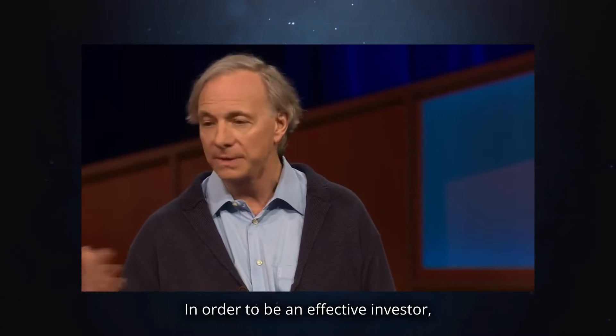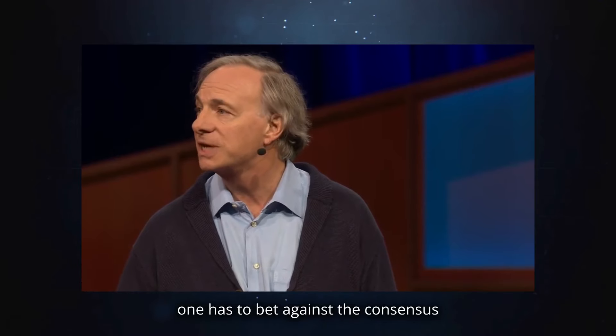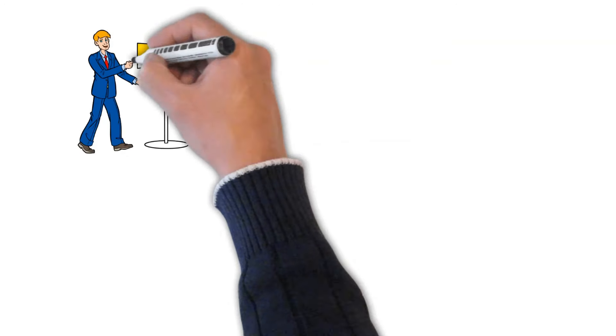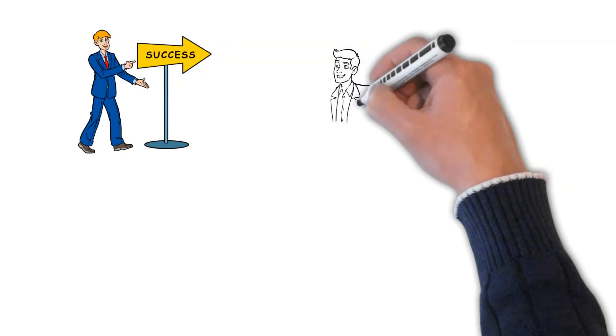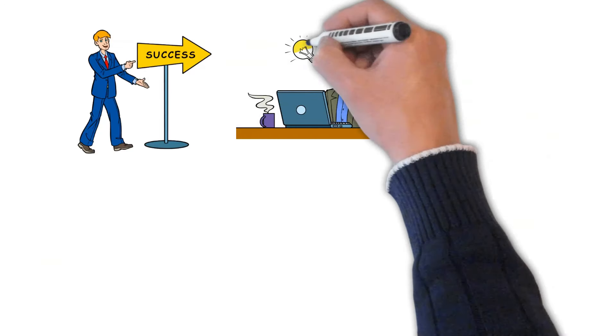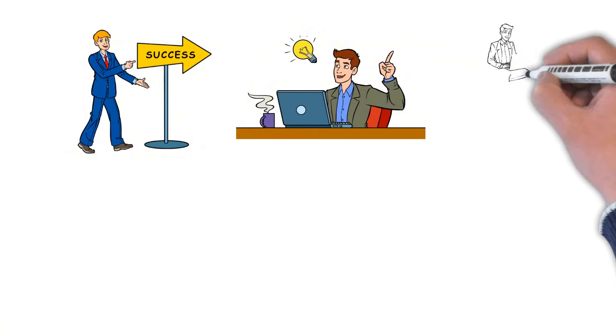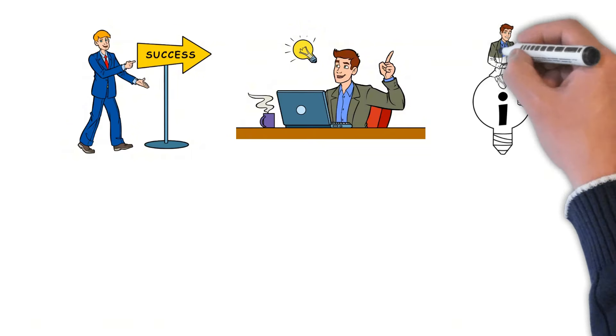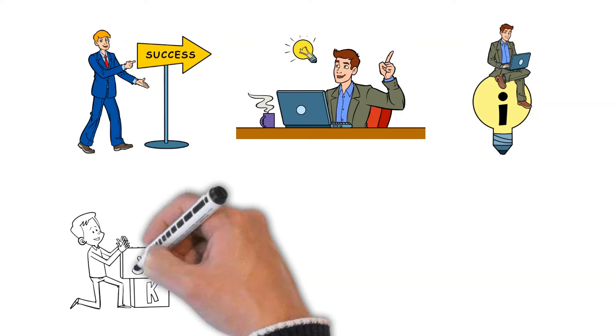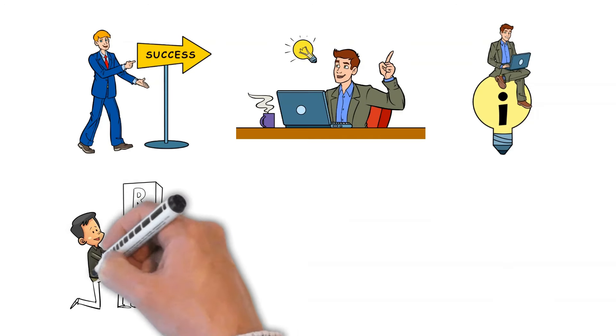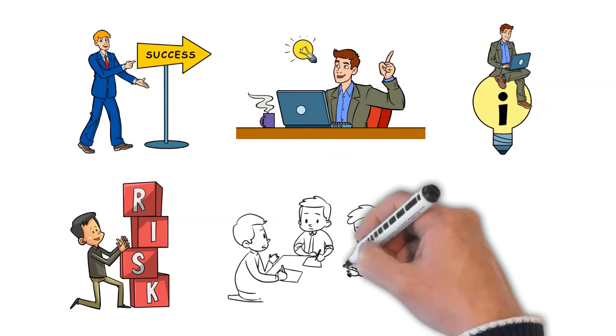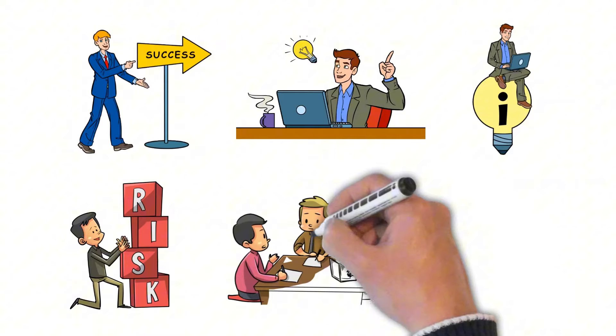In order to be an effective investor, one has to bet against the consensus and be right. To be successful in the markets or as an entrepreneur, one has to be an independent thinker who bets against the consensus and is right because the consensus is built into the price. The key to this type of success is being comfortable being an independent thinker and being comfortable with being wrong. After all, being an independent thinker means going against the grain, which means there is always a risk of being wrong. But the only way to truly succeed is to be comfortable with that risk and to have the conviction to stand by one's beliefs.